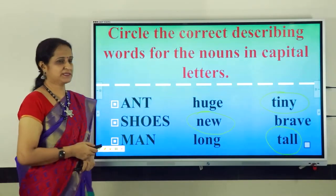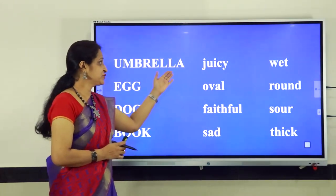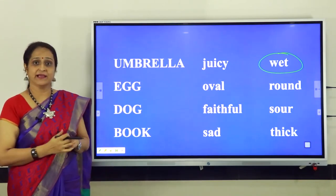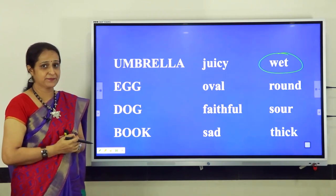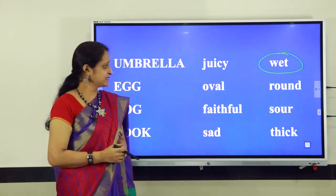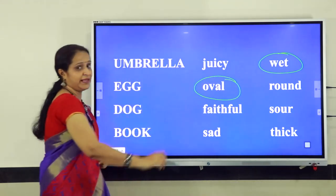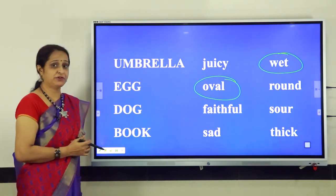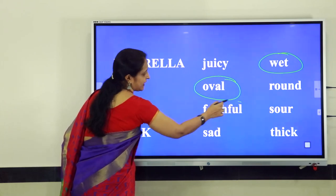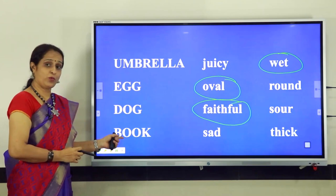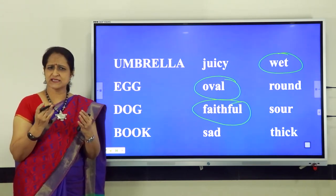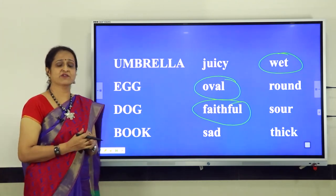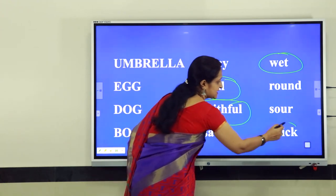Let us see some more examples. What describing word can be used for the noun umbrella? Is it juicy or wet? Yes, wet is the correct describing word. Next we have the noun egg. What describing word can be used for the noun egg? Is it oval or round? Yes, oval is the correct describing word for the noun egg. Next, the noun dog — can we use faithful or sour to describe it? Yes, faithful is the correct describing word. Last, we have the noun book. Can you say the book is sad, or can you say the book is thick? Thick is the correct describing word. Let us circle the describing word thick.